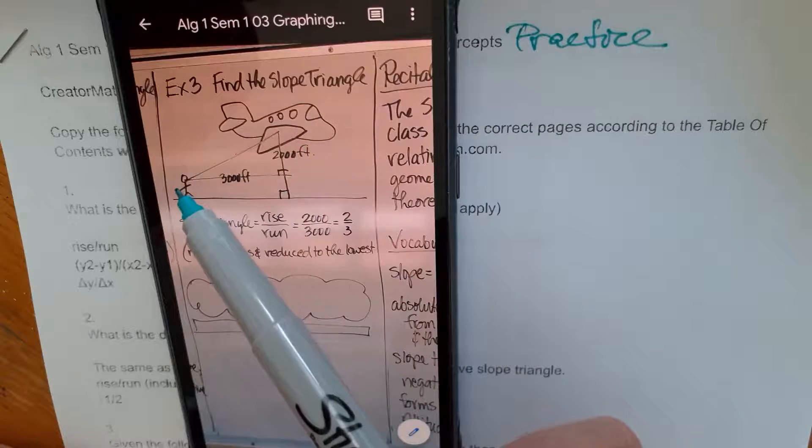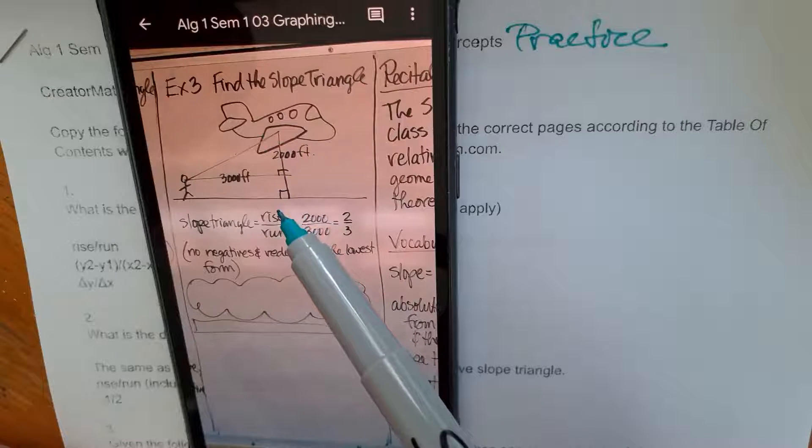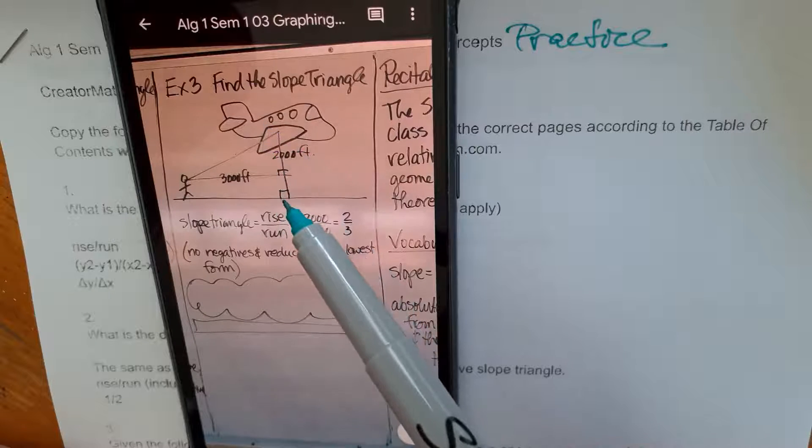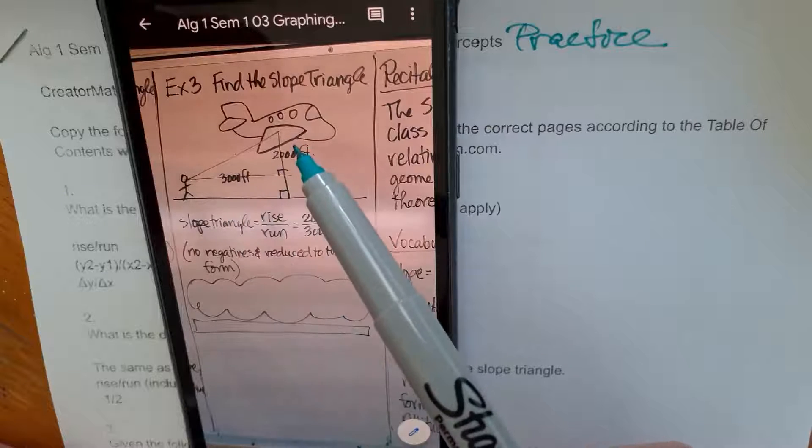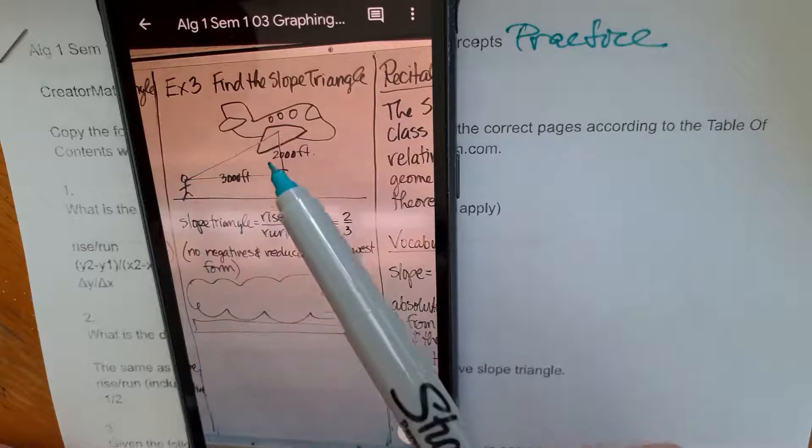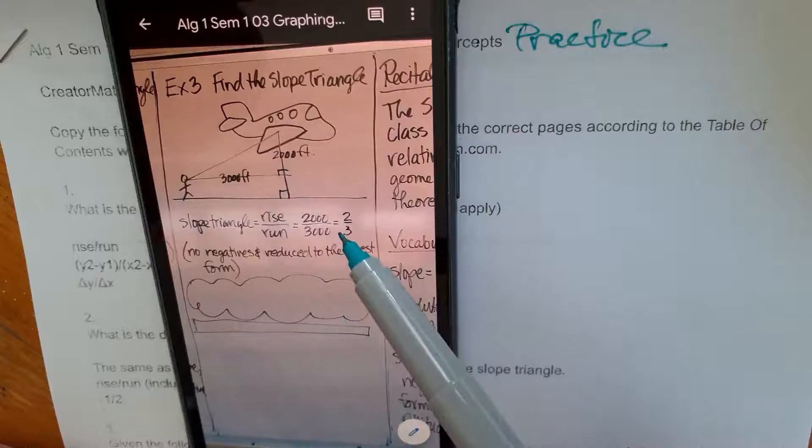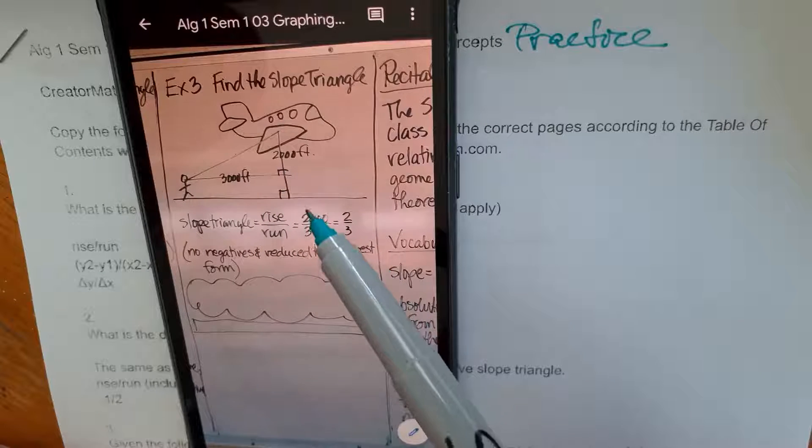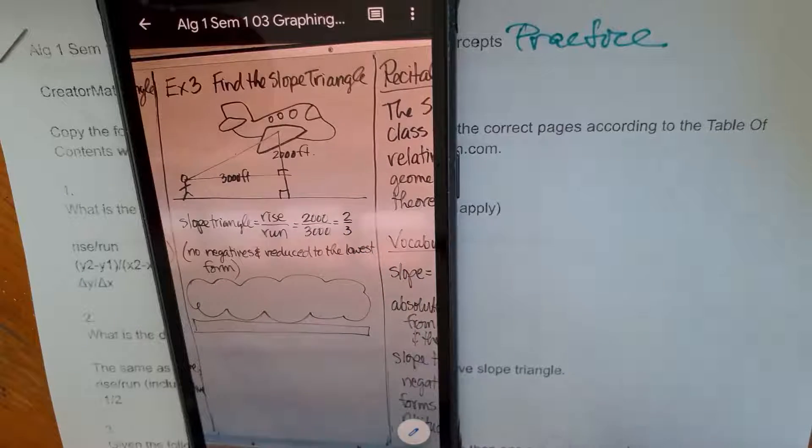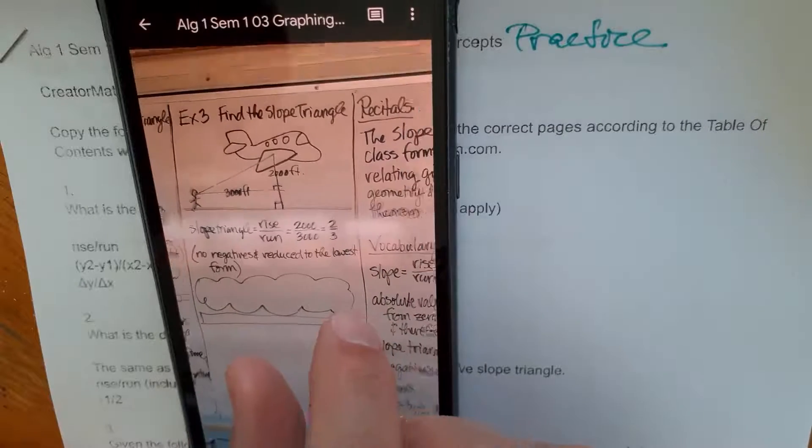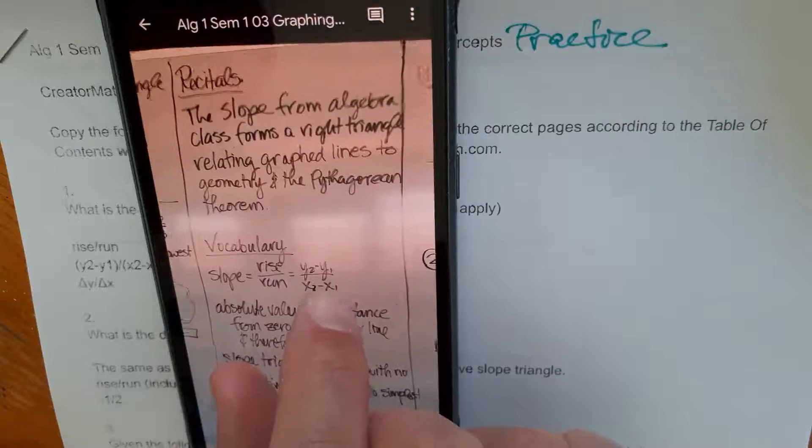Here's an airplane. The person's 3,000 feet from directly below the airplane and the airplane is 2,000 feet from that point. So it creates a triangle here. Notice it's a right triangle. But we have a rise of 2,000 feet and a run of 3,000. So 2,000 over 3,000 cancel out all the zeros. We get a slope triangle of 2 over 3. No negatives. It's reduced to the simplest form.